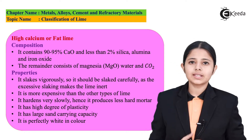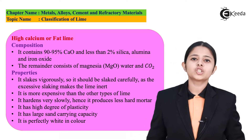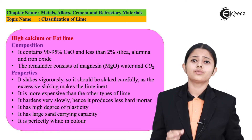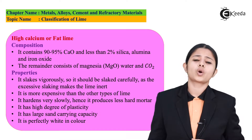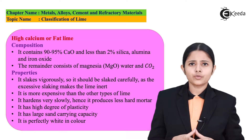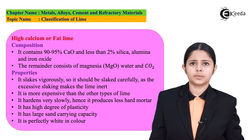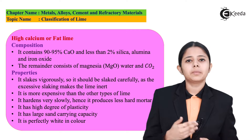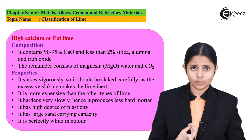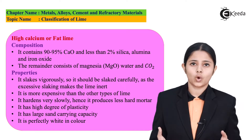The first one is high calcium lime or fat lime. High calcium lime or fat lime consists of 90–95% of oxides of calcium, that is CaO. Apart from that, it consists of 2% of aluminium and silica. The remaining part is made up of iron oxide, magnesium oxides, water and carbon dioxide.